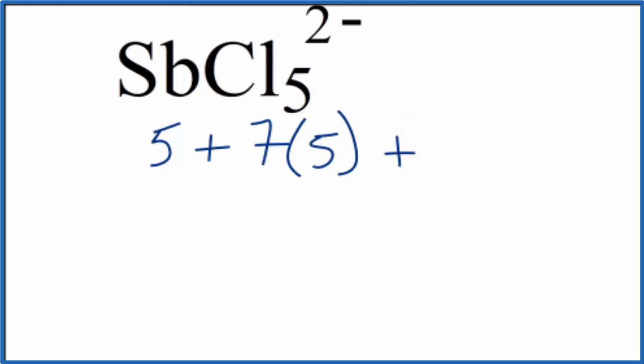And then this 2 minus up here, when we have this 2 negative, that means we have 2 extra valence electrons. So we have a total of 42 valence electrons for the SbCl5 2- Lewis structure.